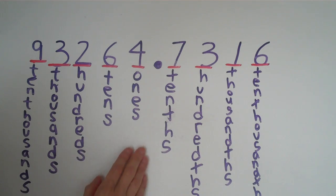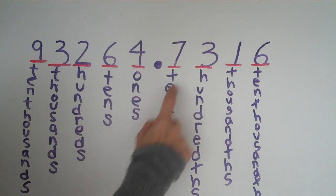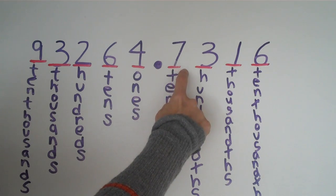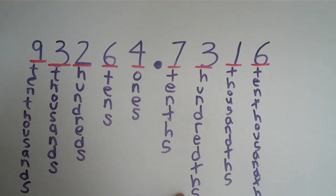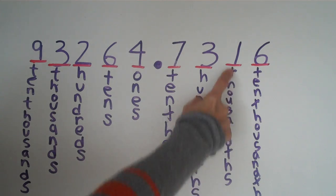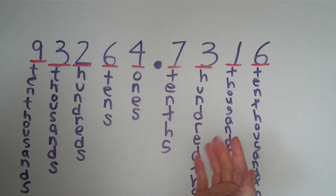So if you have the decimal there, and you're reading this number seven, this number seven would be read as seven tenths. This number three would be read as three hundredths. This number one would be read as one thousandth, and so on.